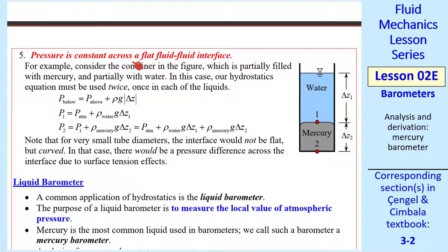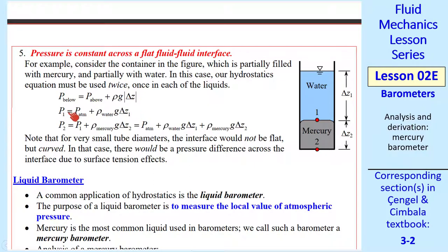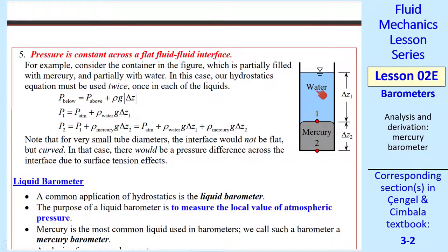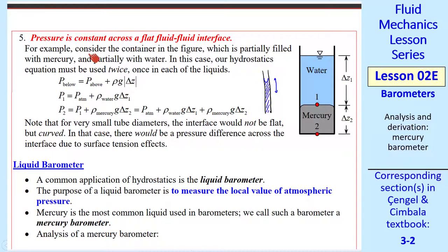Rule number five: pressure is constant across a flat fluid-fluid interface. For example, water and mercury here. I drew it with a small meniscus on each side of the tube. When you have multiple liquids, you need to apply our workhorse equation twice, one for the water and one for the mercury. For the water, p₁ = p_atm + ρ_water·g·Δz₁. We do a similar thing for the mercury, but use ρ_mercury. Plugging this one into here, we get p_atm + ρ_water·g·Δz₁ + ρ_mercury·g·Δz₂ = p₂. You need to be careful if you have tubes that are a very small diameter, because the liquid forms a meniscus and also a capillary rise, which invalidates this rule.